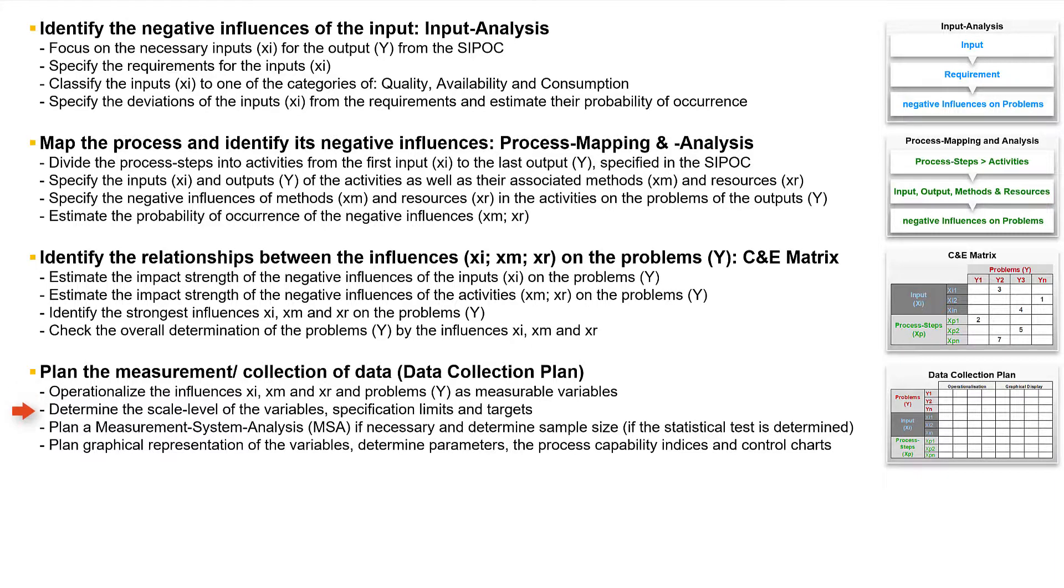Then we determine the scale level of these variables, we define specification limits and targets, and plan a measurement system analysis if necessary. We determine the sample size and plan the graphical representation of the variables, determined parameters, the process capability indices, and suitable control charts.